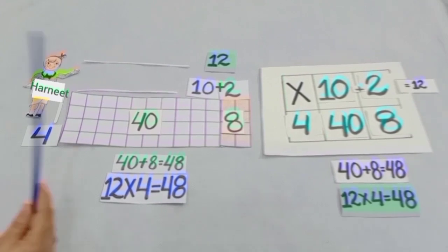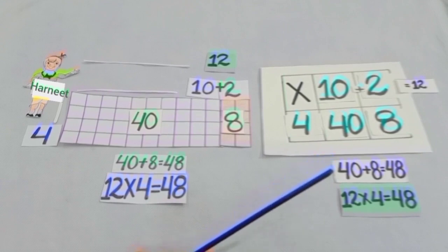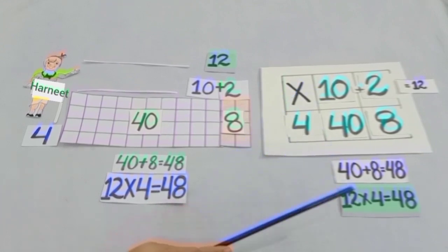So dear students, 4 members of Harneet's family gave her 48 rupees.